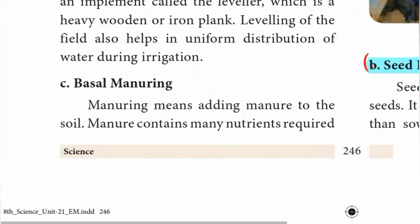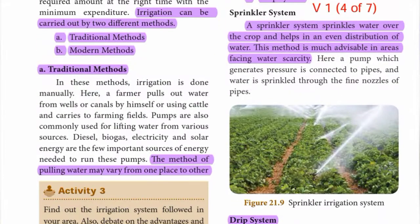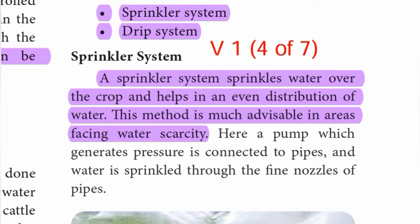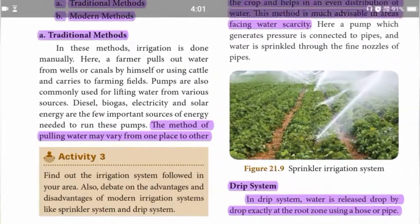Next, from page 248: sprinkler system — fourth point. A sprinkler system sprinkles water over the crop and helps in an even distribution of water. This method is much advisable in areas facing water scarcity. This is the fourth of the seven points in the first detail answer.